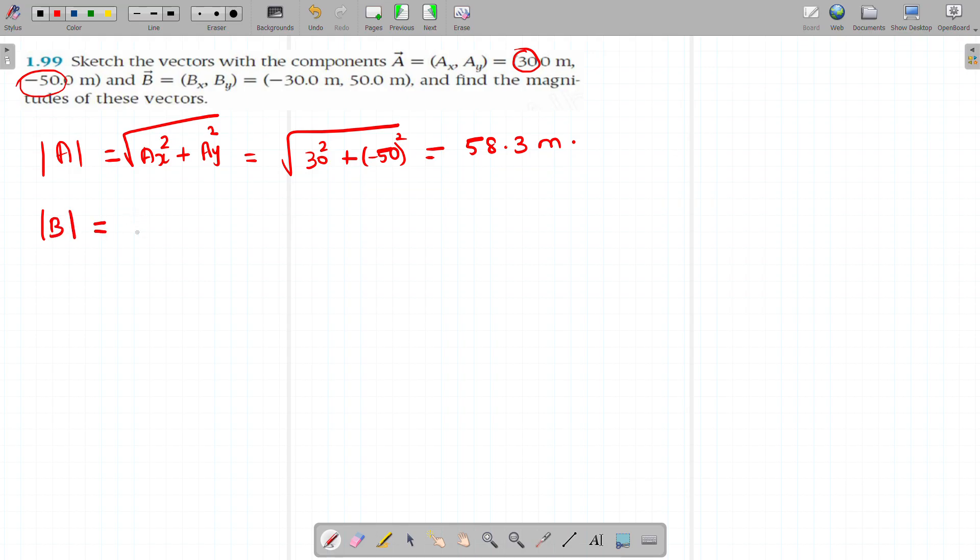Magnitude of B vector: Bx squared plus By squared. Bx is minus 30 and By is 50, and you will get 58.3 meters, the same.